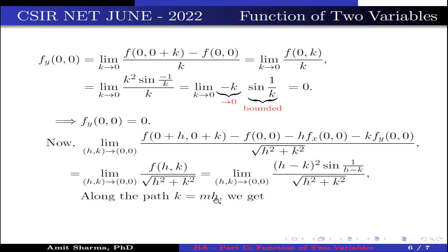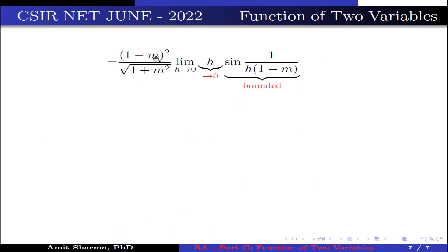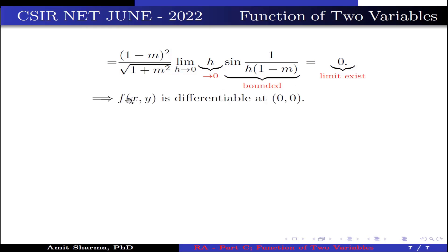Along the path k = mh, the expression becomes (1−m)²·h²·sin(1/(h(1−m))) / (h·√(1+m²)), which simplifies to [(1−m)²/√(1+m²)]·h·sin(1/(h(1−m))). Since h → 0 and sin is bounded, this limit is 0. Therefore the limit exists and f(x,y) is differentiable at (0,0). Option 4 is true.